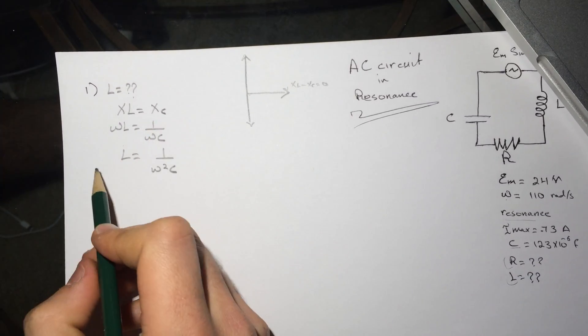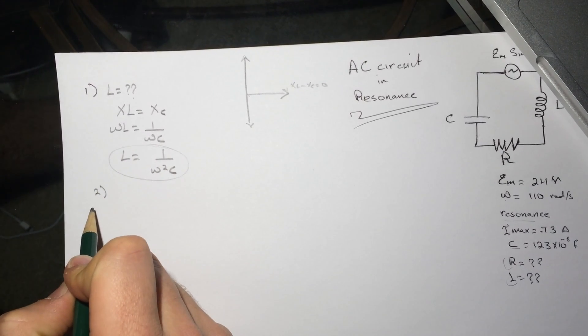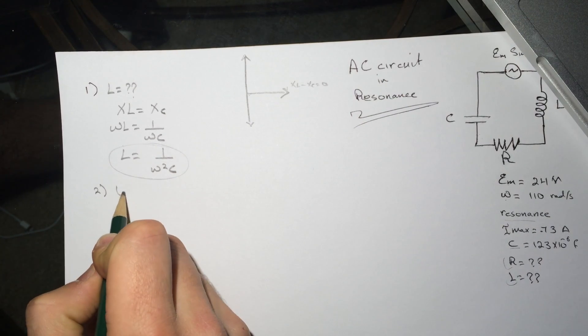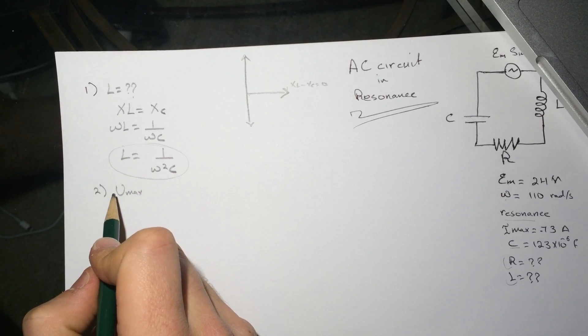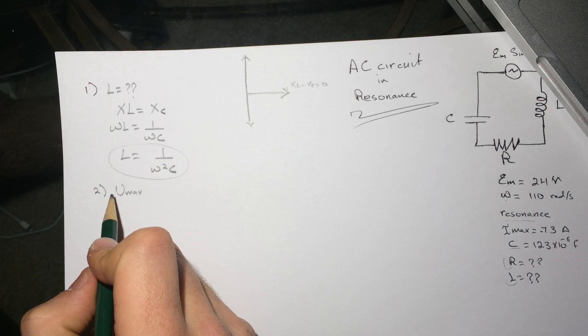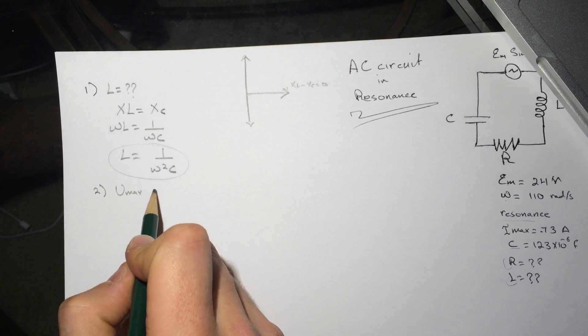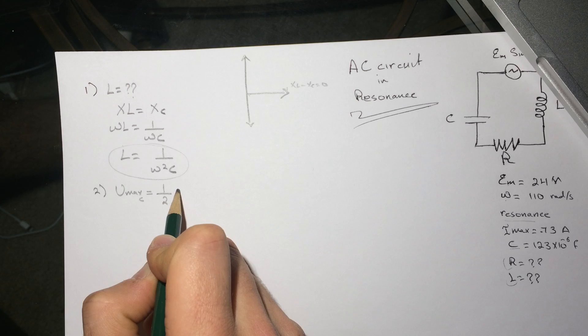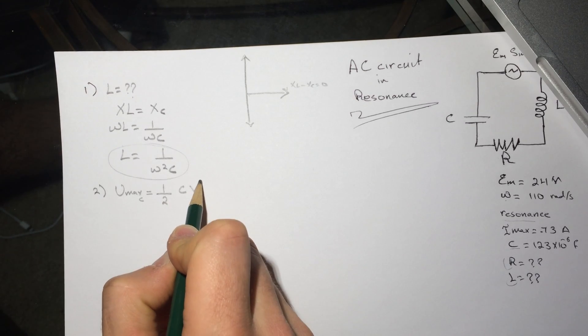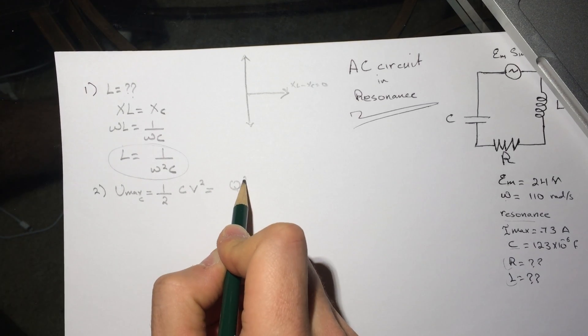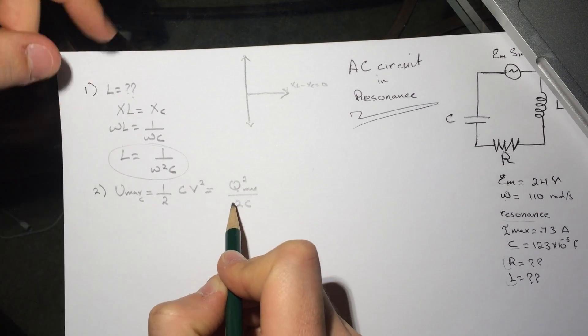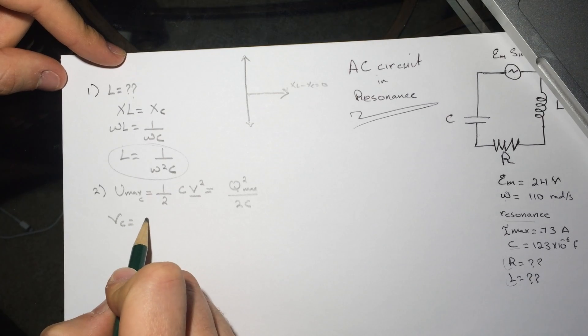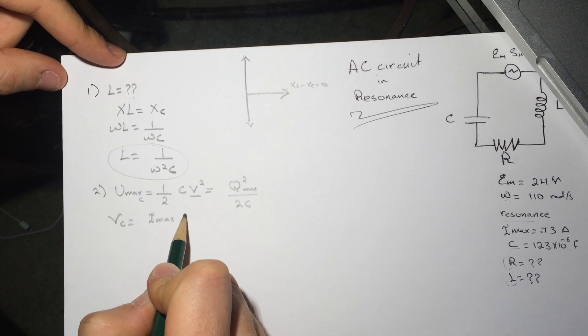Number two is asking what is Umax, the value of the maximum energy stored in the capacitor during one cycle. So Umax for the capacitor will be equal to half CV squared, or you can use Q squared max divided by 2C. We need to find V, so VC will be equal to Imax times XC.